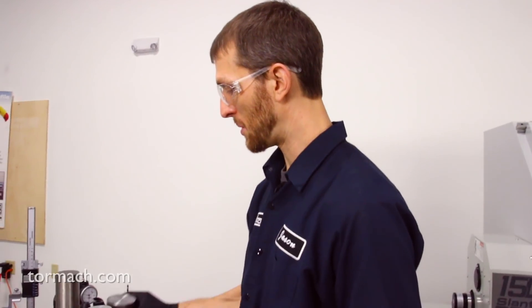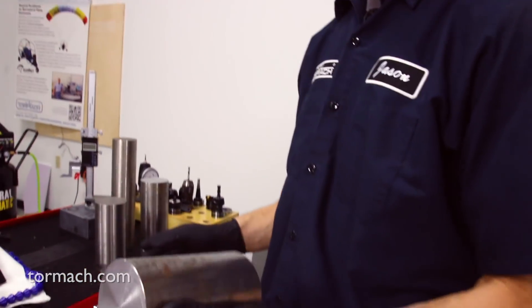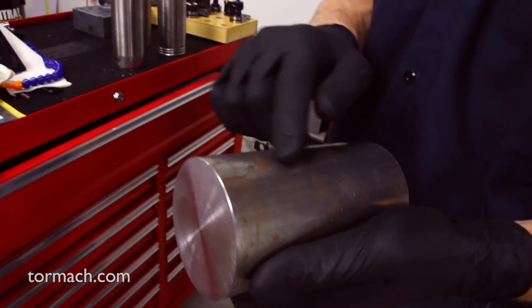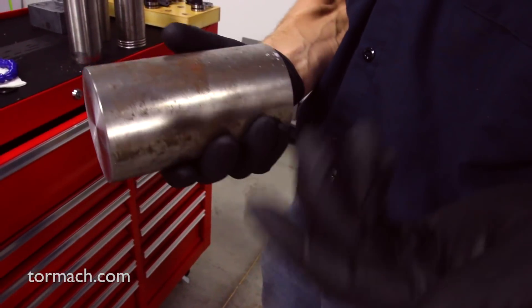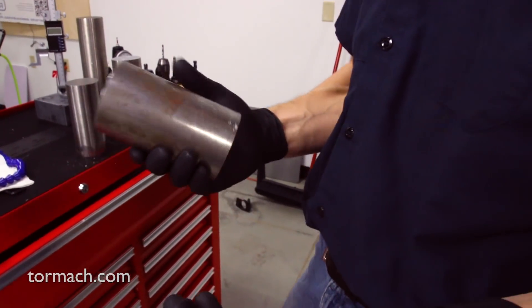A couple other things we can do is just a good visual inspection. You can see a couple different pieces that I've found here. We have this piece which has some surface rust on it, so obviously this is some sort of steel.